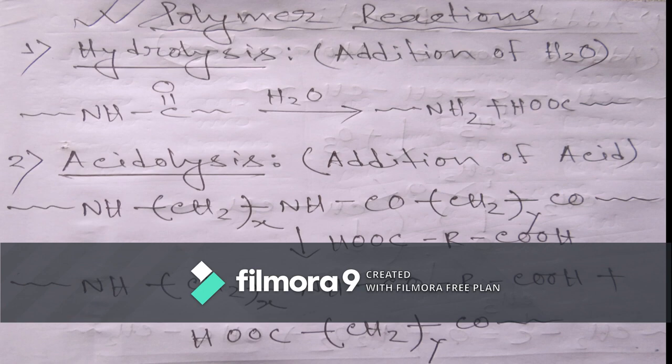Acidolysis means addition of acid into the polymer chain. We add acid into the polymer chain and this acid degrades the polymer into different types of polymer. We incorporate dicarboxylic alkyl acid and this acid divides this polymer into one acid polymer and another base polymer.